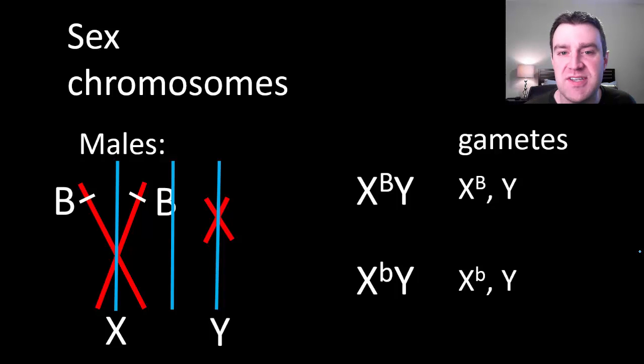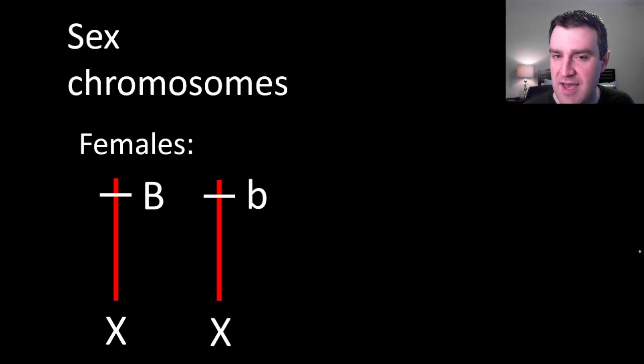And if we were to think about females, we'll see that females are pretty much the same as in traditional one trait inheritance problems, because females have two X chromosomes. We still want to represent those X chromosomes in the genotype, so maybe write it this way. So maybe mom is X big B, X little b, showing the gene on both of her X chromosomes.